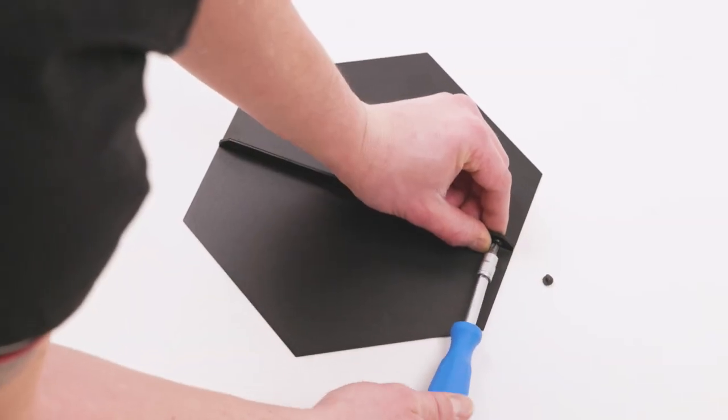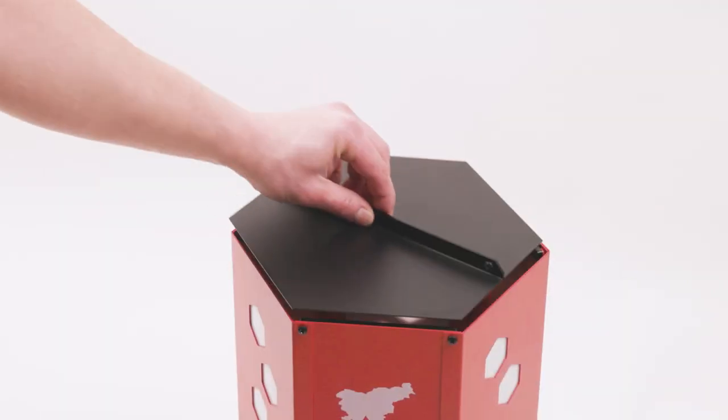Assemble the lid using two lid plates and two small screws. Put the lid on top of the feeder.